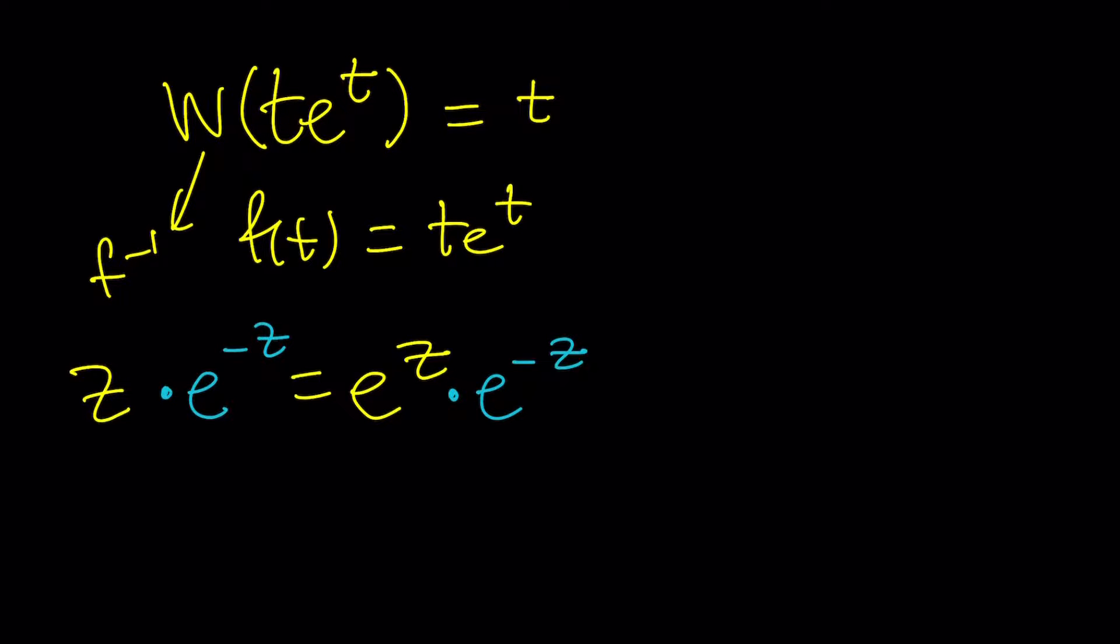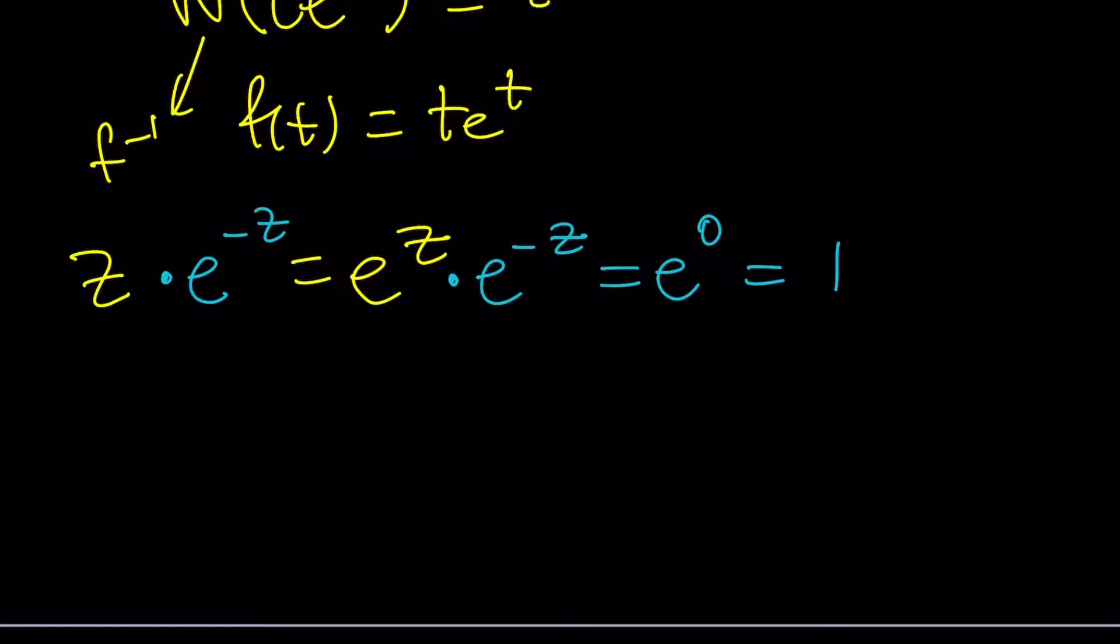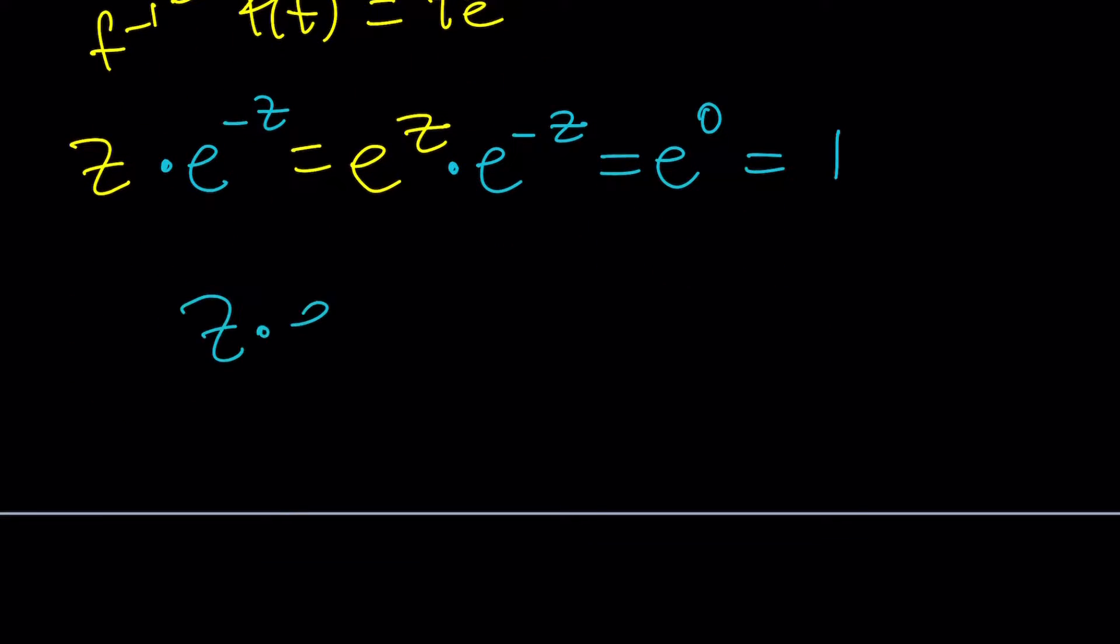So, e to the z times e to the negative z is the same as e to the 0, which is 1. So, we get the following result. Z e to the negative z equals 1. Awesome. I almost got T e to the T. All I need is a minus sign. So, let's just go ahead and multiply both sides by negative 1.